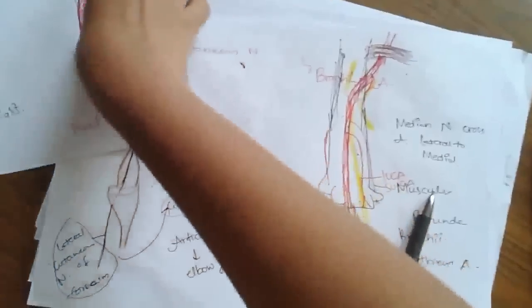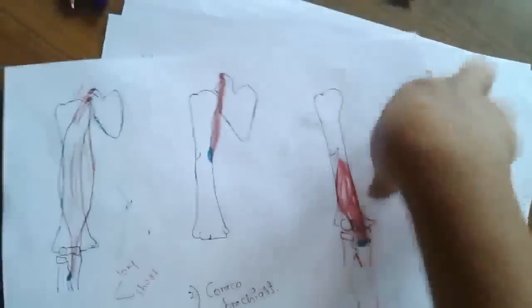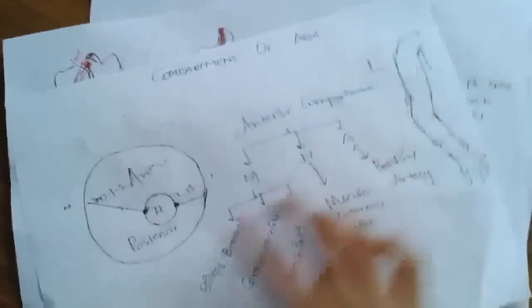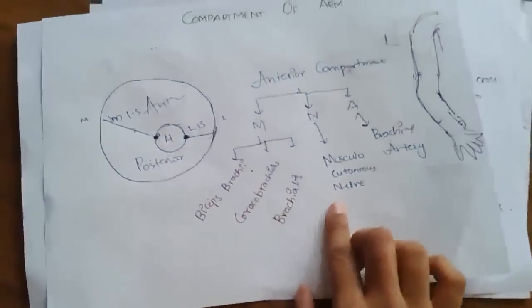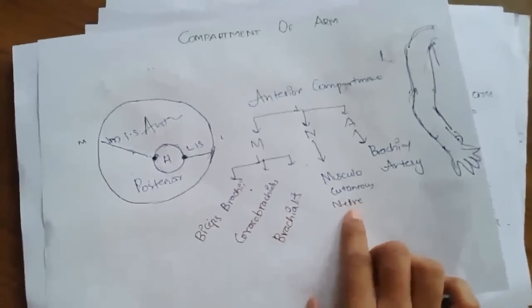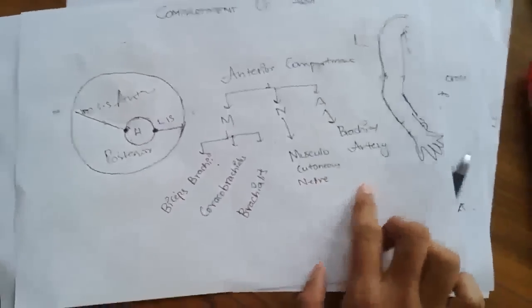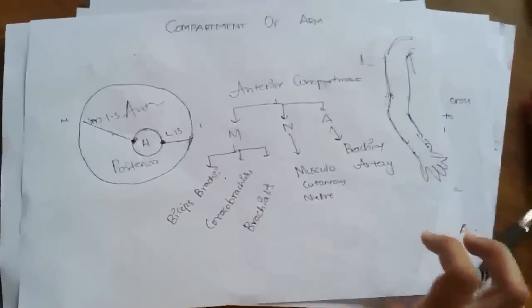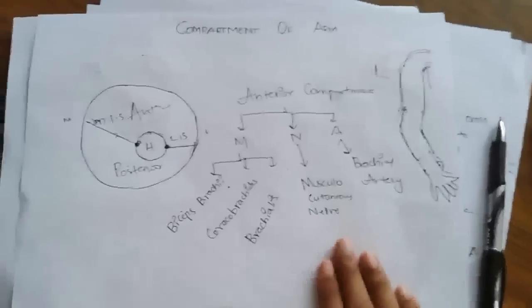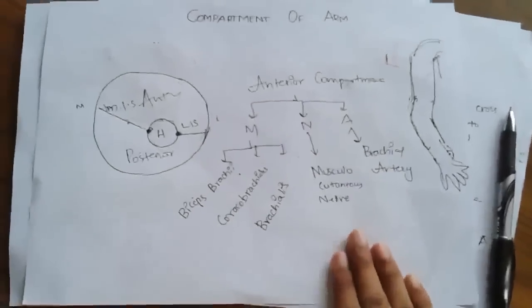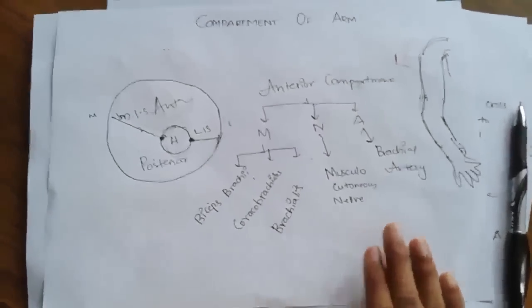So, I have completed the anterior compartment of the arm — the three muscles (biceps brachii, coracobrachialis, and brachialis), the musculocutaneous nerve, and the brachial artery.